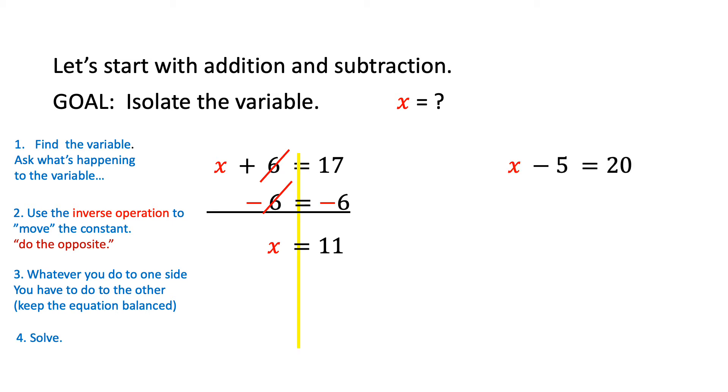Here's a subtraction problem: x minus 5 equals 20. Draw a line so you make sure you're working on the right side of the equation. Do the opposite to x. Since we're subtracting 5, we're going to add 5 to both sides. Cancel out the 5s, and we're left with x equals 25. If we substitute 25 back in, we see that 25 minus 5 does equal 20, so our answer is correct.